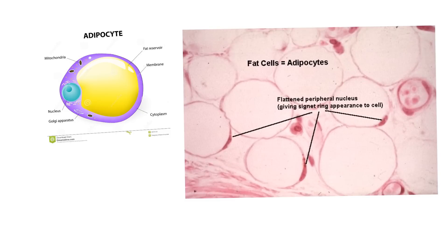Now let's do a little histology. Here are fat cells - adipocytes - and it very well mimics what we saw in the figure. Here's one adipocyte. You can see the nuclei are pressed off to the peripheral region, just like in the diagram. This is real tissue versus the artist's depiction - that's why I like to look at histology.